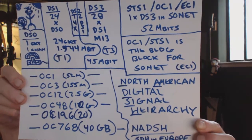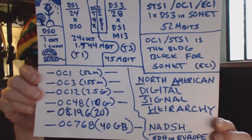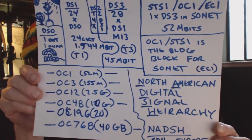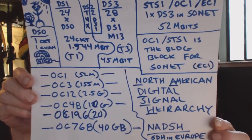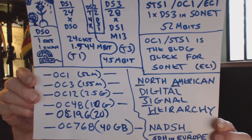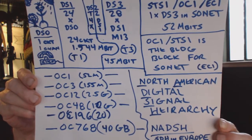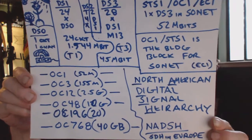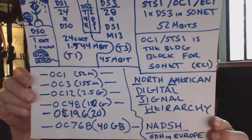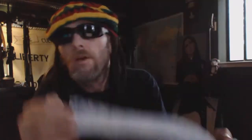So OC1 has 672 channels. OC3 has 3 times 672 channels. OC12 has 12 times, OC48 has 48 times, OC196 has 196 times, OC768 has 768 times. And there we are.